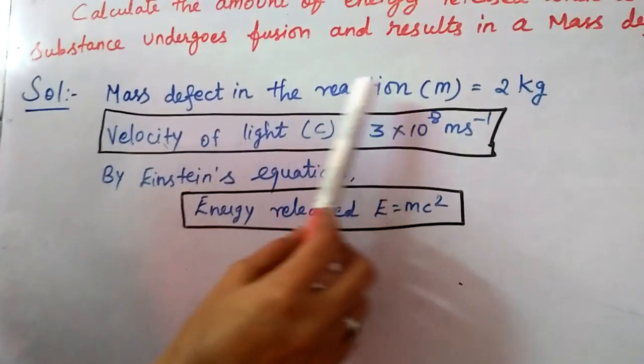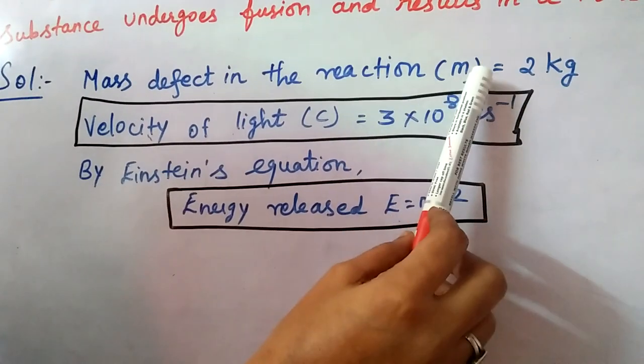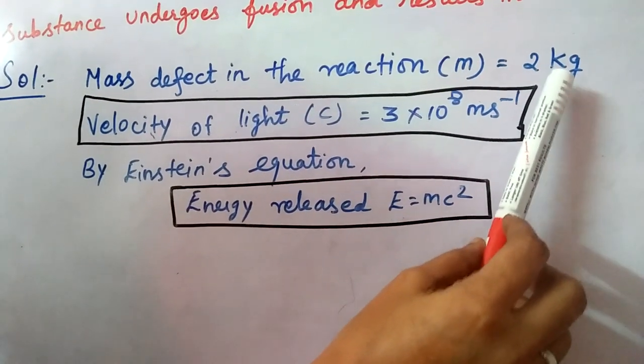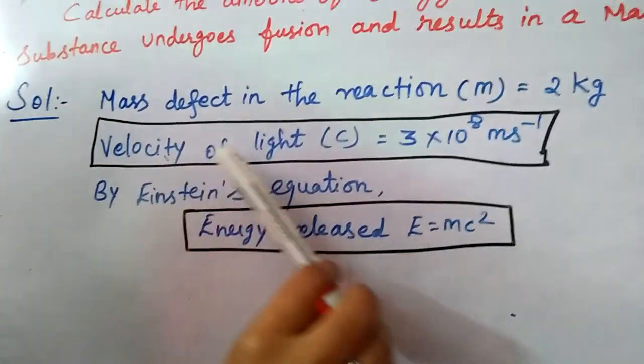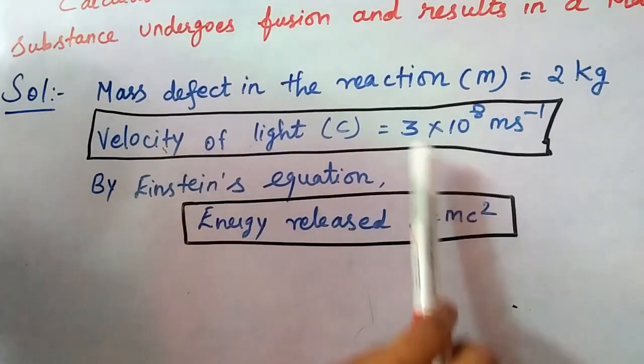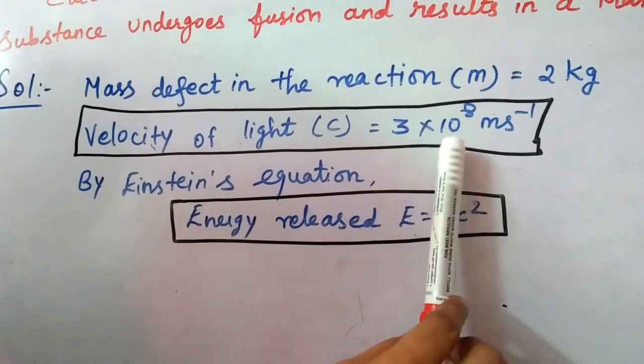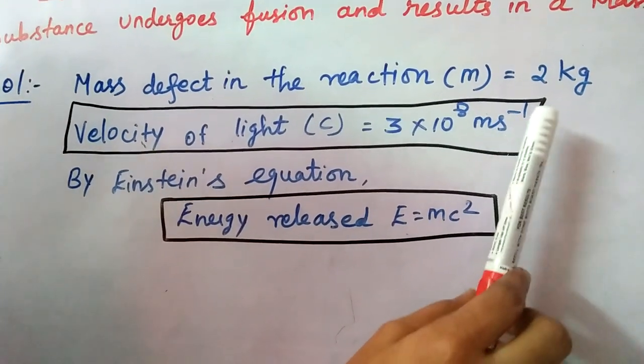Mass defect in the reaction M equals 2 kg. We know the mass. Velocity of light C is equal to the constant, the general constant formula: 3 into 10 power 8 meter per second.